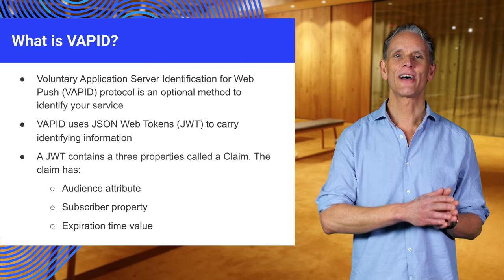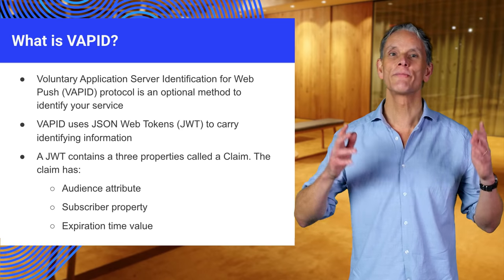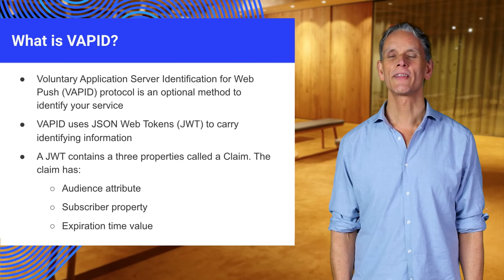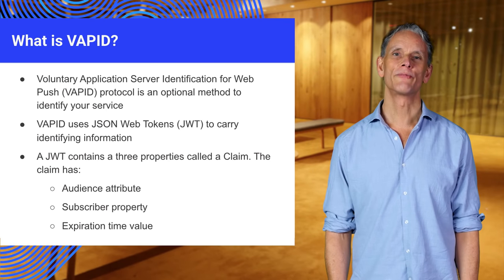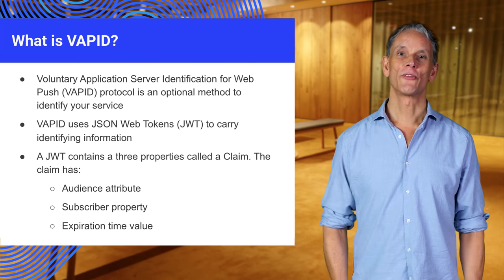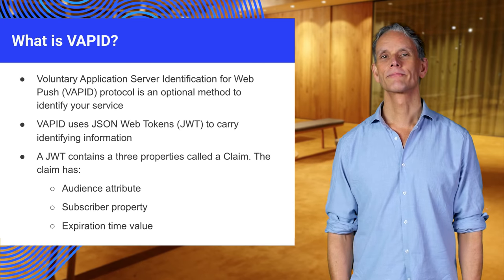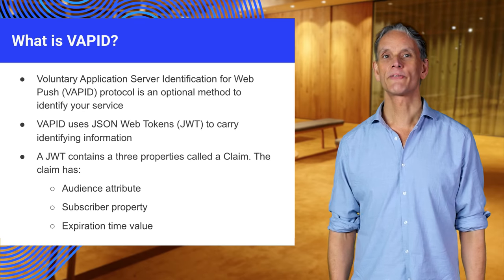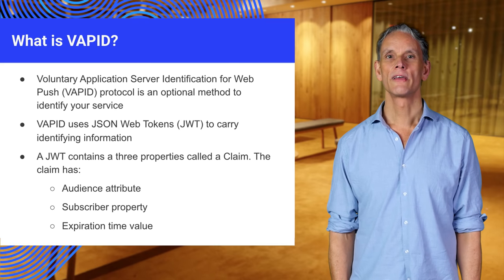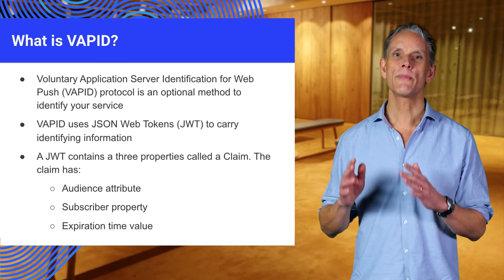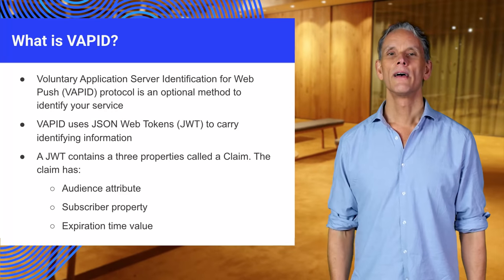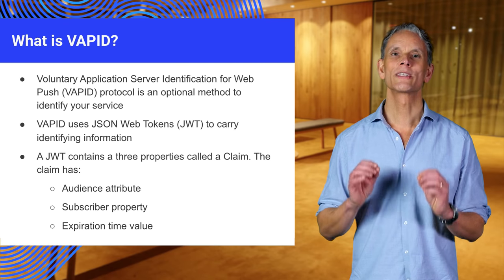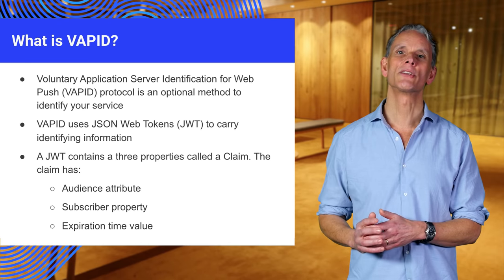You need a way to ensure secure communication between the user and your server, between your server and the push service, and between the push service and the user. The user needs to be sure that messages are from the domain they claim to be from and have not been tampered with. VAPID was created to solve this problem. VAPID identification information can be used by the push service to attribute requests made by the same application server to a single entity, and can be used to reduce the secrecy for push subscription URLs by restricting subscriptions to a specific application server.